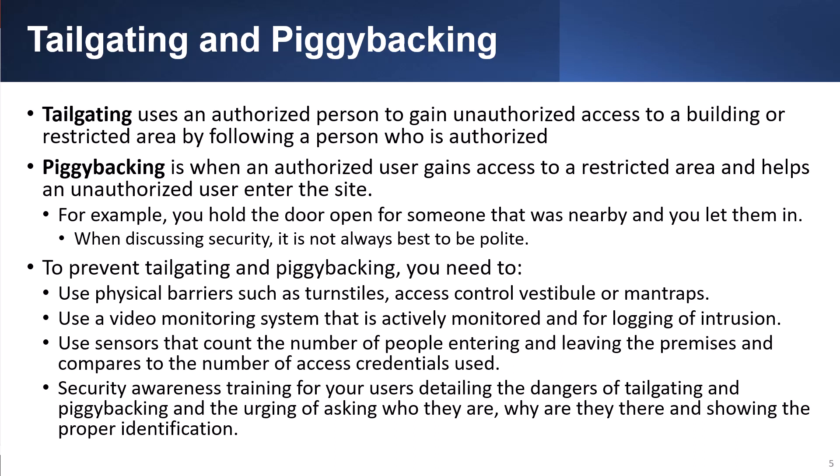To prevent tailgating and piggybacking, you need to use physical barriers such as turnstiles, access control vestibules, or man traps. Use a video monitoring system that is actively monitored for logging of intrusion. Use sensors that count the number of people entering and leaving the premises and compare to the number of access credentials used. Security awareness training for your users detailing the dangers of tailgating and piggybacking, and urging them to ask who they are and why they are there and to show proper identification.